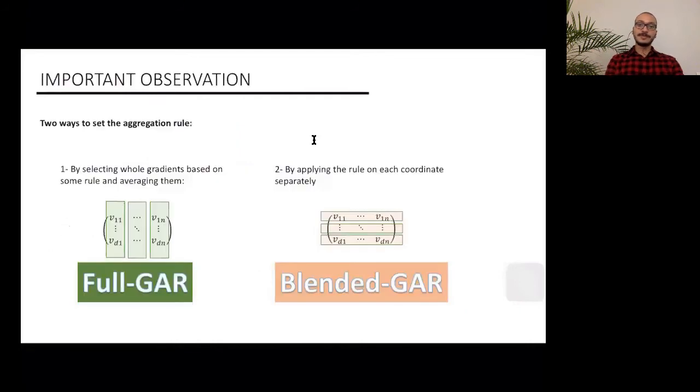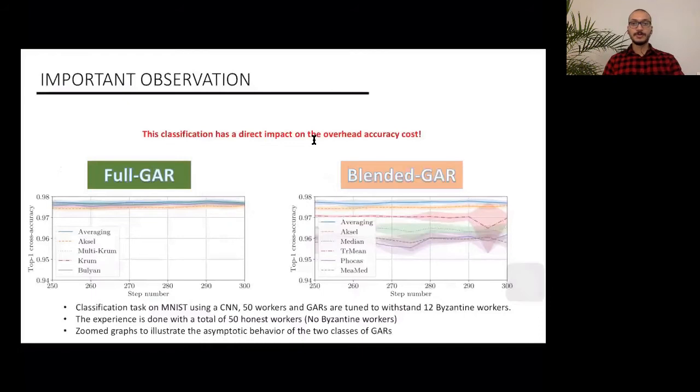In robust statistics, there are two ways to deal with outliers. You can either select whole vectors based on some rule or filter, and average only those selected vectors to come up with the final output. And this is what we called in the paper a full aggregation rule or full guard for short. Or you can apply the rule directly on each coordinate, and this is what we call blended guard. From experimentation, we observed that blended guard never reached the top accuracy in a setting where we only have honest workers, but full guards do.